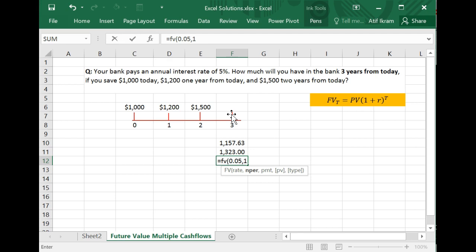So NPER is one. There is no payment. So go past that. And finally, the present value, quote unquote, is negative $1,500. And when you close the parentheses, this is $1,575.